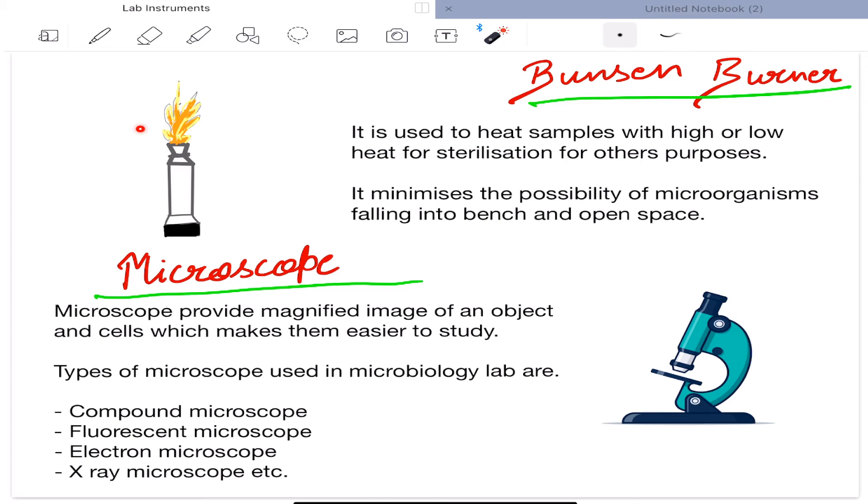Next is Bunsen burner. It is used to heat samples with high or low heat for sterilization and for other purposes. It minimizes the possibility of microorganisms falling onto bench and open space. Now microscope. Microscope provides magnified image of an object and cells which makes them easier to study. Types of microscopes used in microbiology lab are compound microscope, fluorescent microscope, electron microscope, and x-ray microscope.